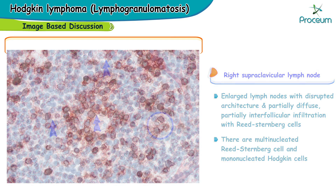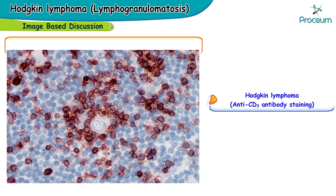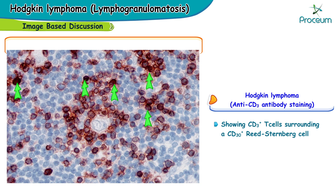This is another microscopic image of the lymph node which has been stained with anti-CD3 antibody and clearly shows CD3-positive T cells surrounding the CD3-positive Reed-Sternberg cells.